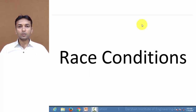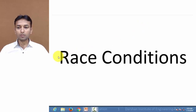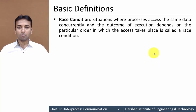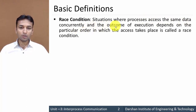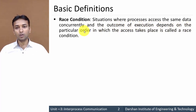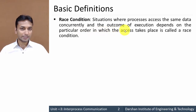Hello everyone. In this video we will learn about basic definitions. The first definition is race condition. If we want to define race condition, it is a situation where two or more processes are accessing the same data or same resource concurrently, and the outcome of the execution depends on the particular order in which the access takes place.